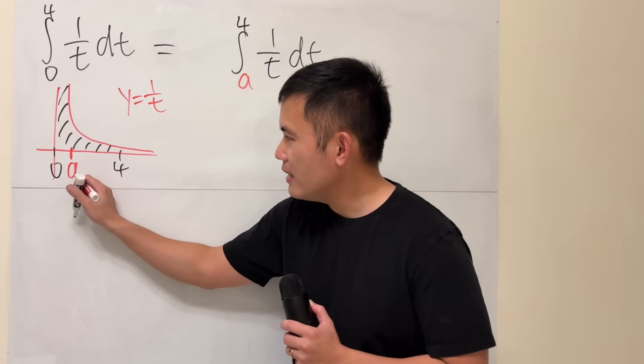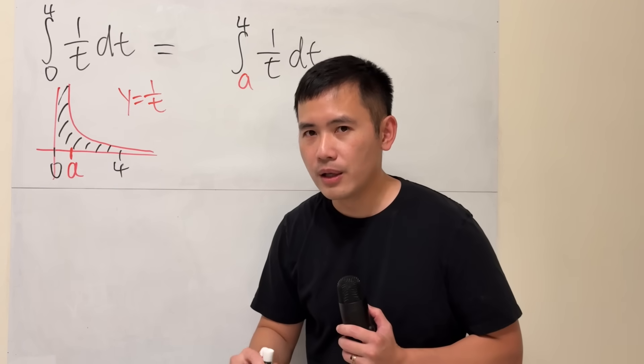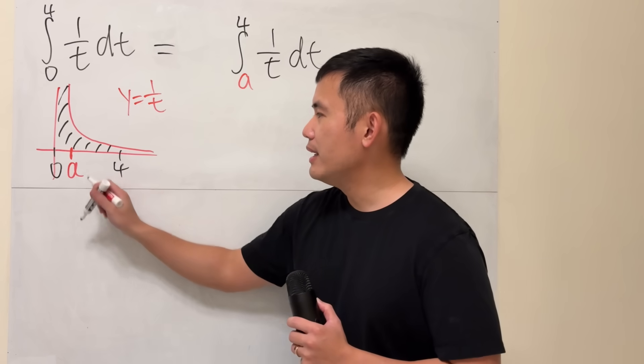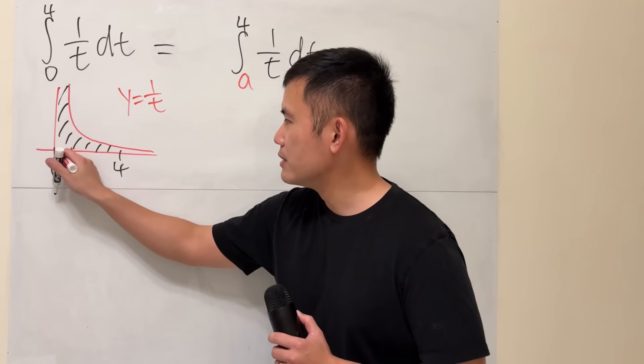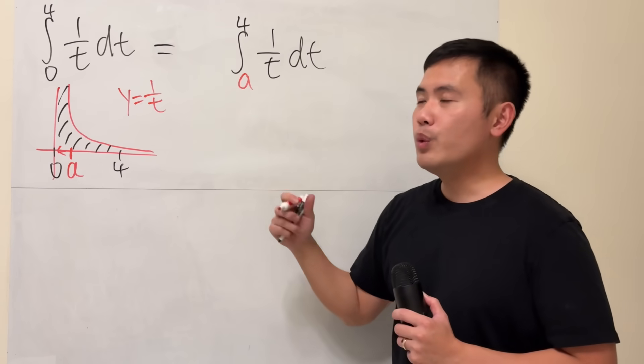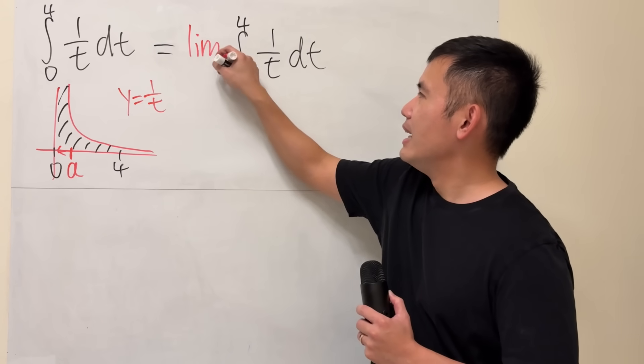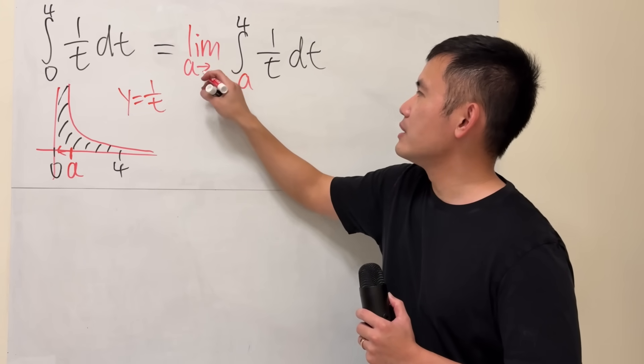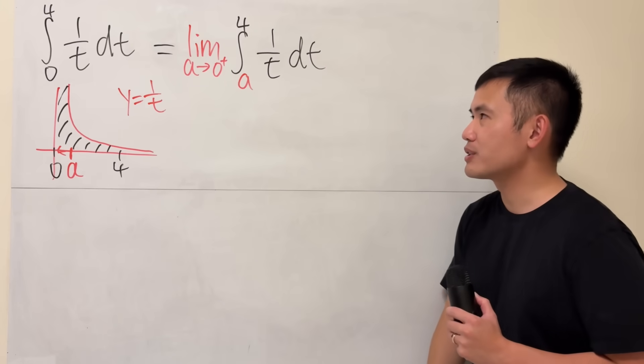Well, we'll just have to make sure that a goes to 0 as close as possible. And since a is going toward 0 from the right-hand side, we will take the limit as a approaching 0 from the positive direction.